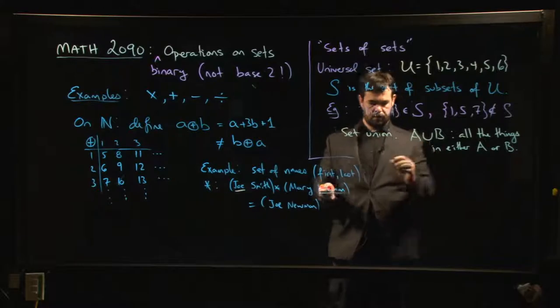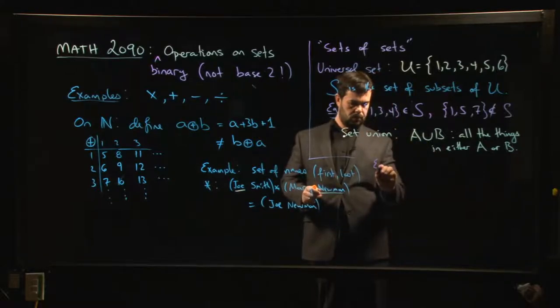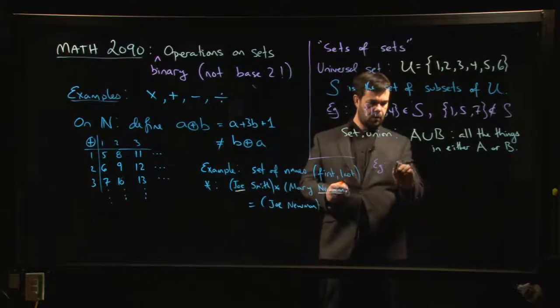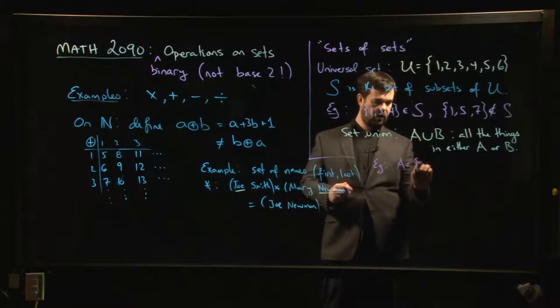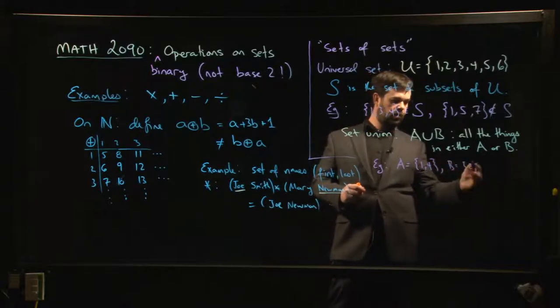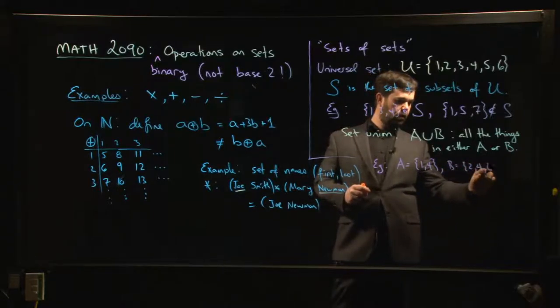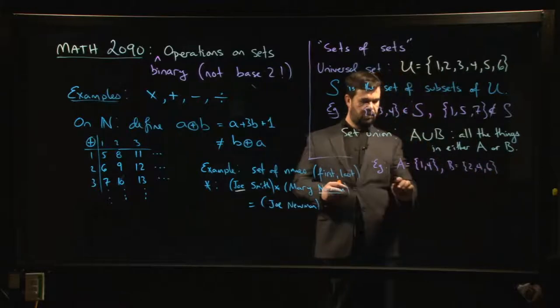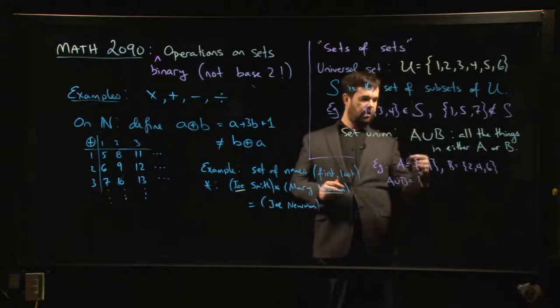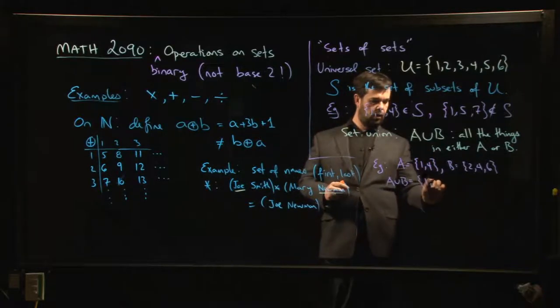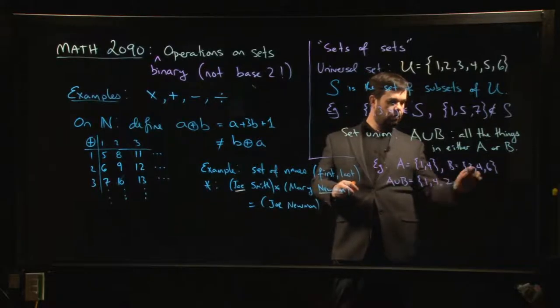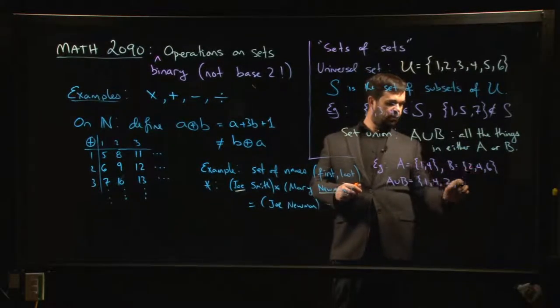So for example, if I had A as the set containing one, four, B is the set containing two, four, six, and I wanted the union, I take everything that's in A - so I take one, I take four - I also throw in everything that's in B - so two, four.